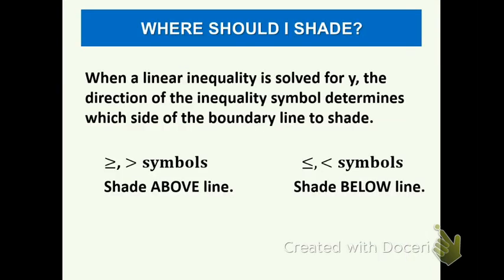This is a summary of what we covered in day one. When a linear inequality is solved for y — meaning y is by itself — the direction of the inequality symbol determines which side to shade from the boundary line. If you have a greater than or equal to or greater than symbol, shade above. If you have a less than or equal to or less than symbol, shade below because the smaller numbers are the ones that work.